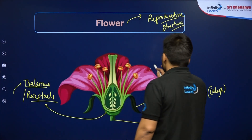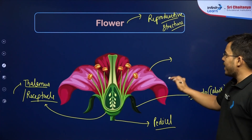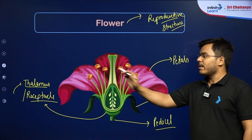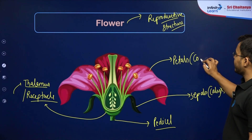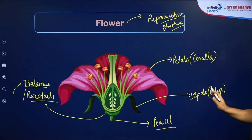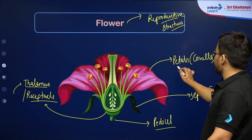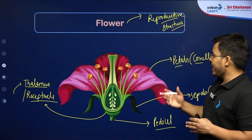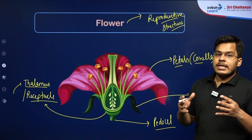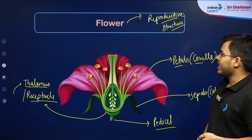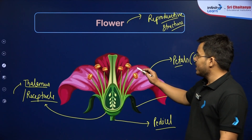The next parts are the most beautiful parts of the flower — the colored petals. A bunch of petals is known as the corolla, just as a bunch of sepals is known as calyx. The function of petals is to attract insects for the process of pollination. They have wonderful colors and fragrances to attract insects so that pollination can occur.